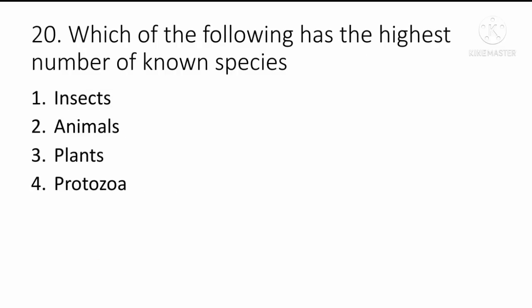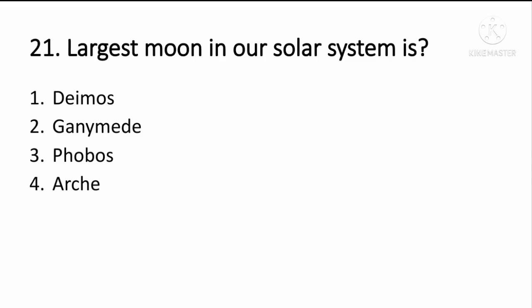Which of the following has the highest number of known species — insects, animals, or plants? The answer is option 1, insects, which have the highest number of known species.